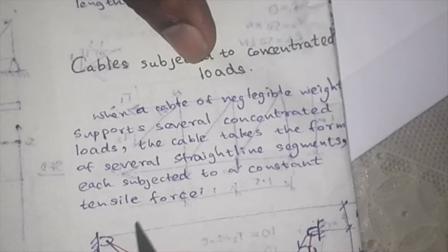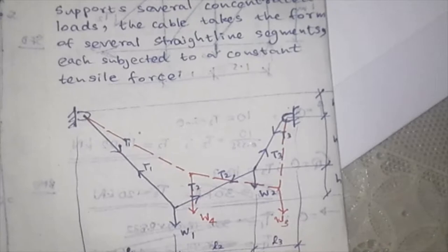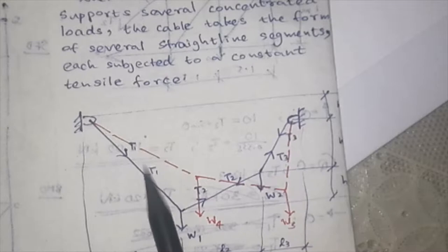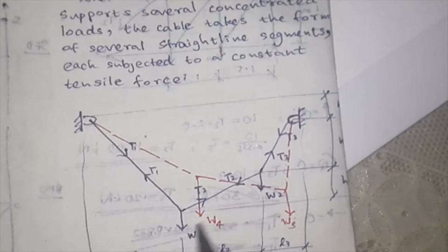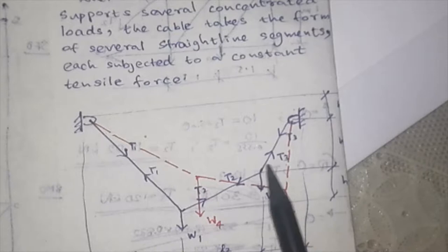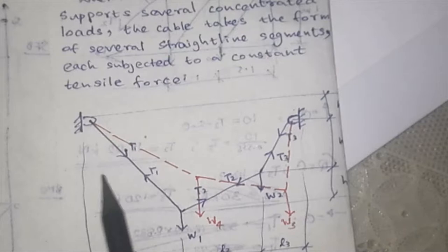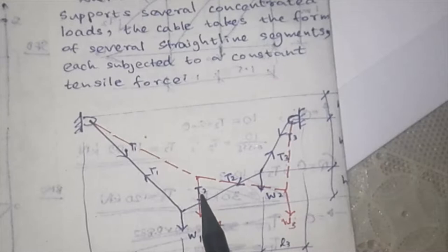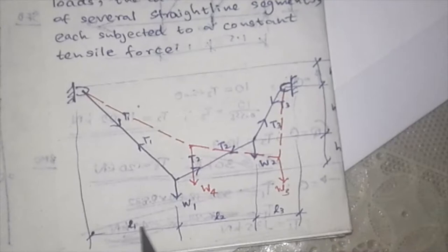You can clearly see this is the cable with several concentrated loads. The cable takes the form of several straight line segments—one, two, three. Each part has tensile forces: T1, T1, T1 in this part, T2, T2 in another part, T3, T3 in the third part.